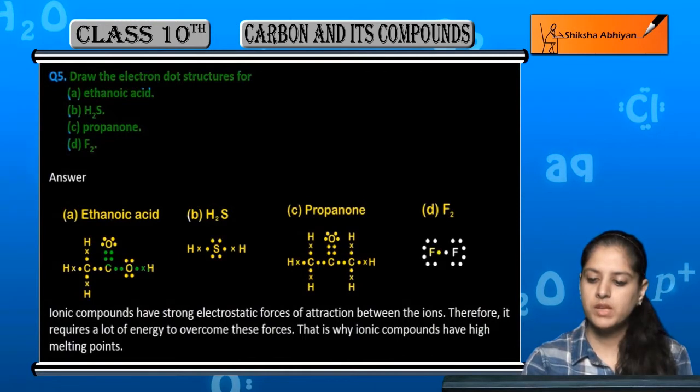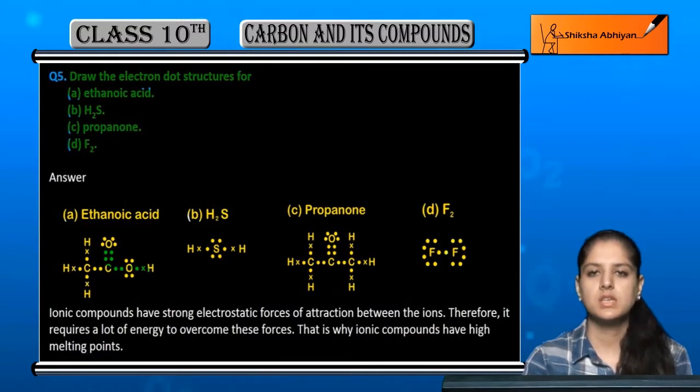F2 is fluorine. Two fluorine atoms, each with 1, 2, 3, 4, 5, 6 valence electrons.